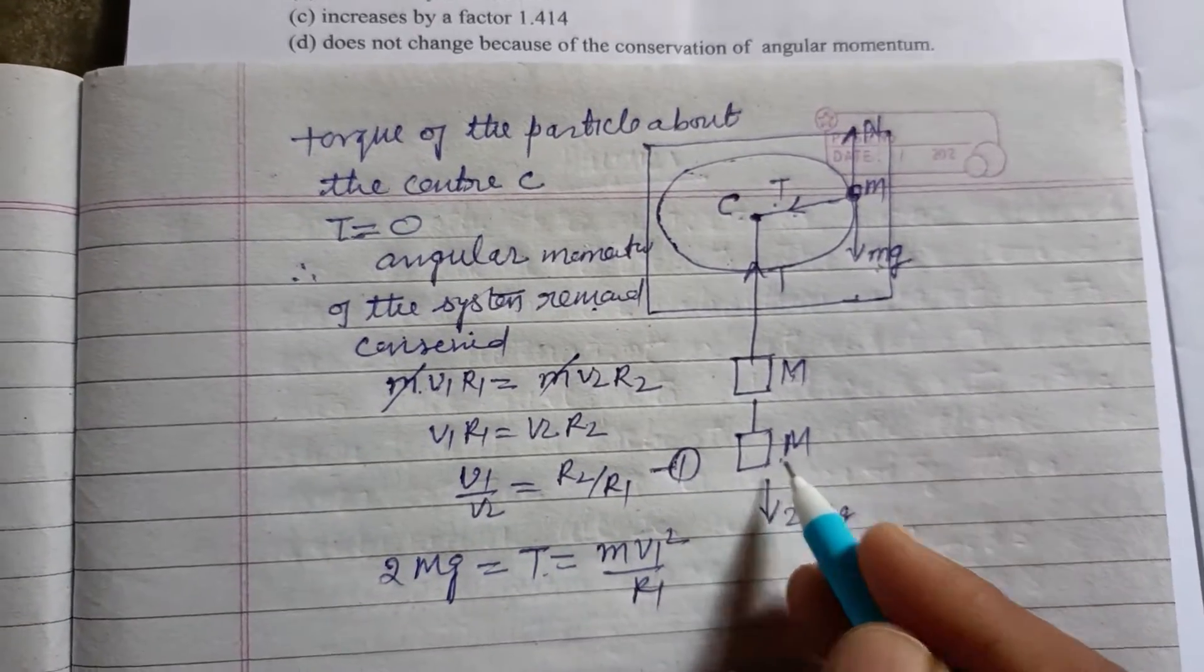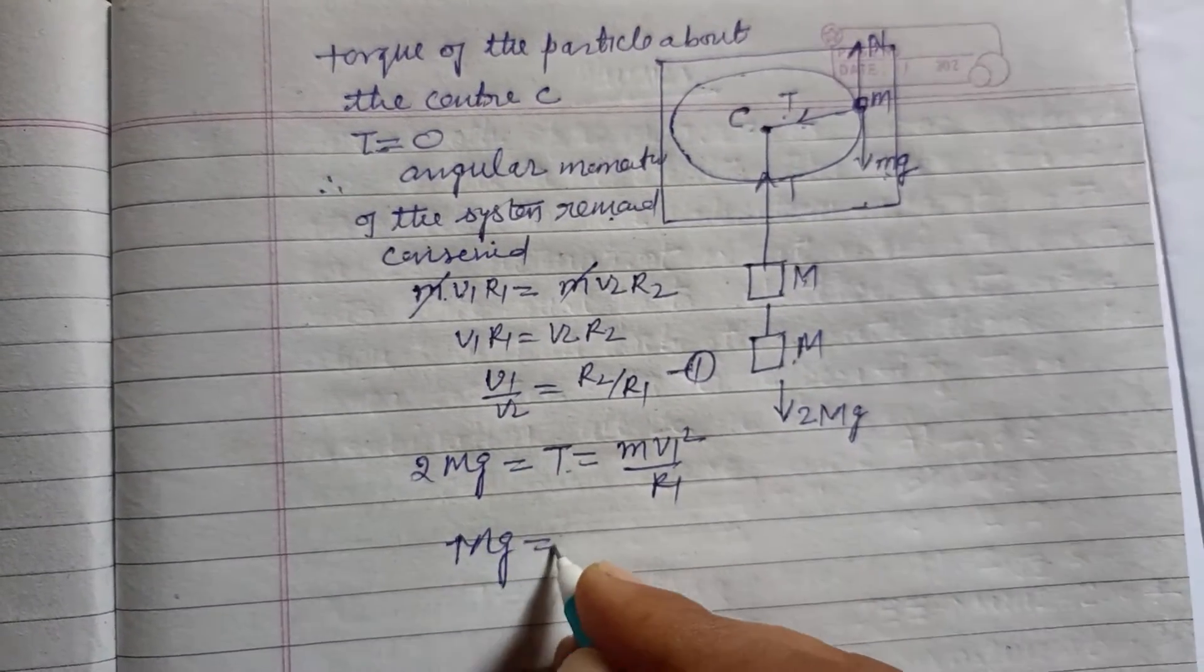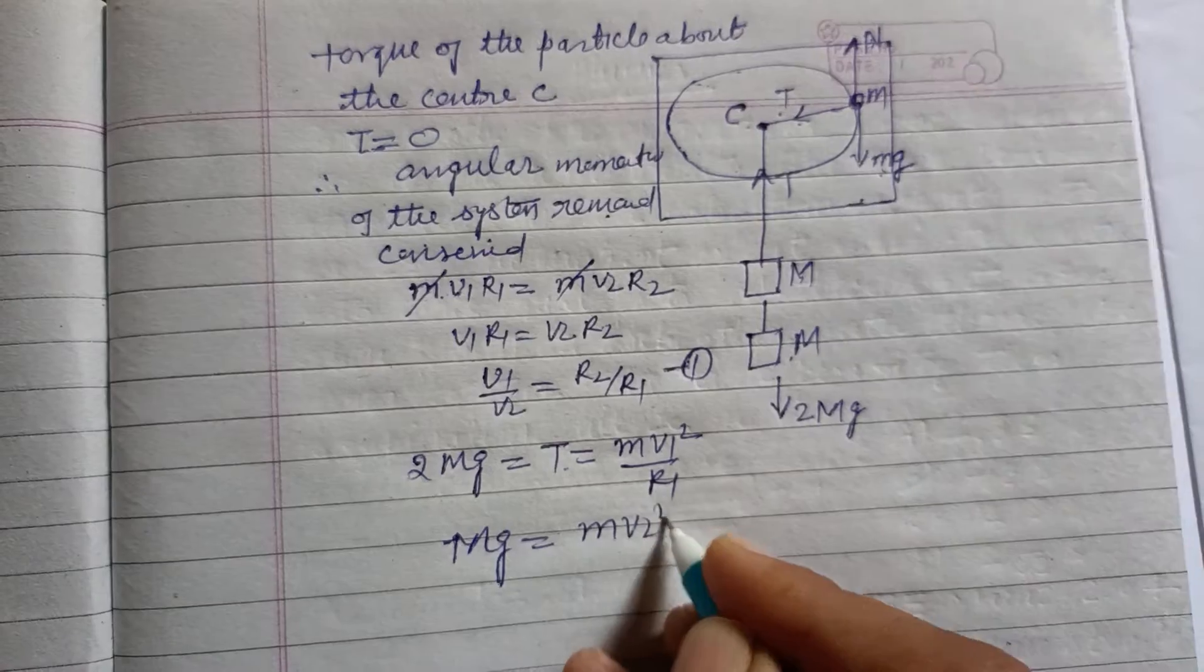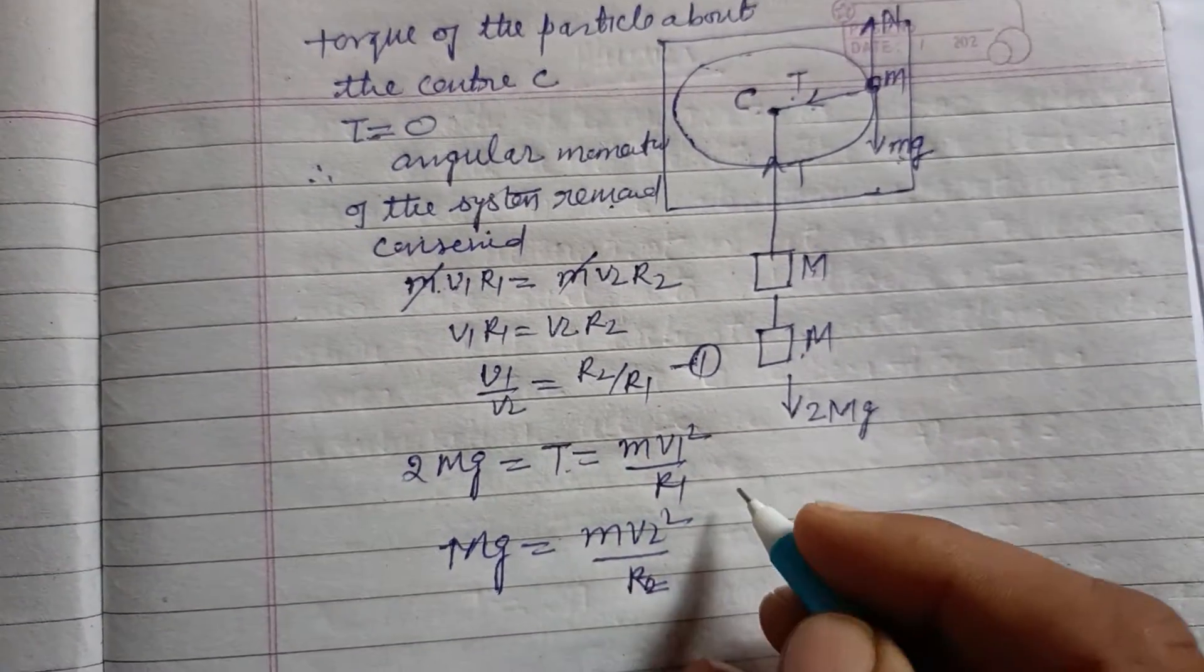In the second case, when mass M is removed, it remains only Mg which is MV2 squared upon R2.